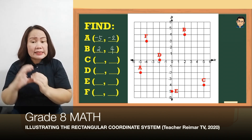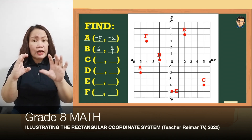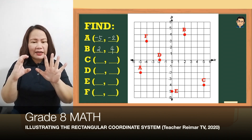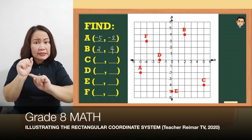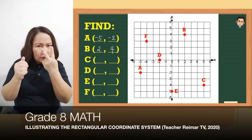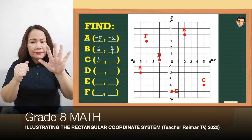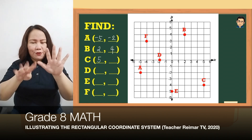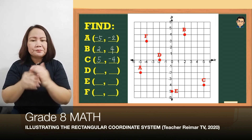Yung C naman ay nasa quadrant 4, na ang coordinates po ay positive-negative. So mag-start po tayo sa 5 na nasa x-axis and then yung negative 4 na nasa y-axis. So (5, -4) yun po yung mga coordinates ng C.